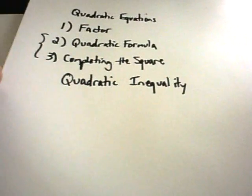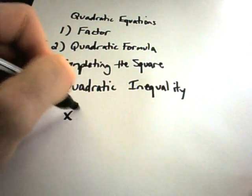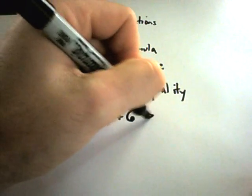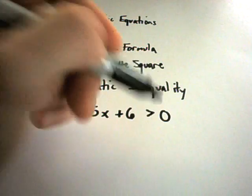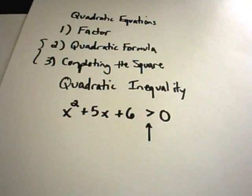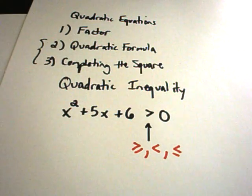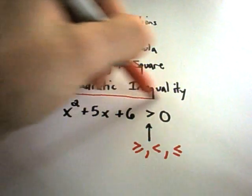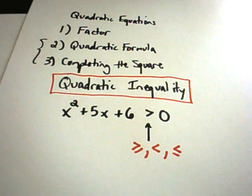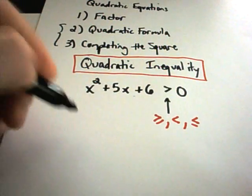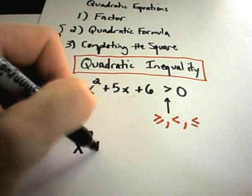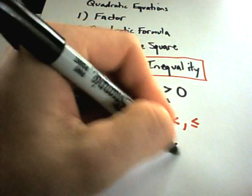A quadratic inequality is basically a quadratic equation where the equal sign is replaced with an inequality. For example, x² + 5x + 6 > 0. The inequality sign in the middle can be greater than, greater than or equal to, less than, or less than or equal to — those are all quadratic inequalities. The first thing you do when solving quadratic inequalities is solve the corresponding quadratic equation.